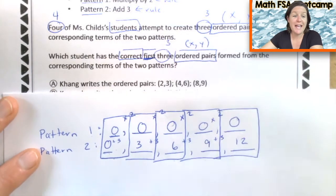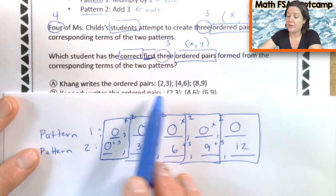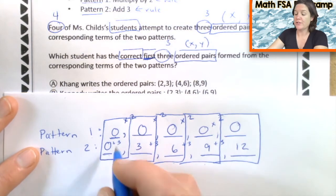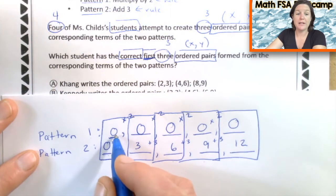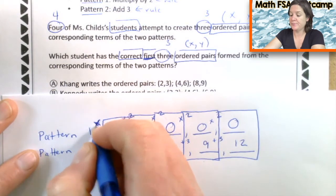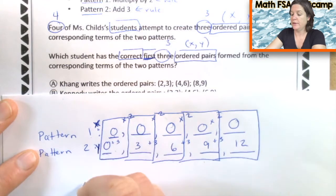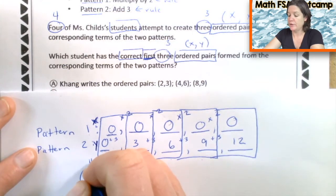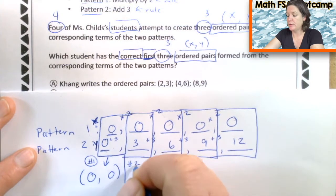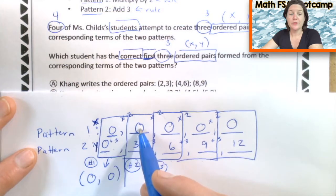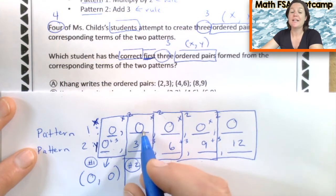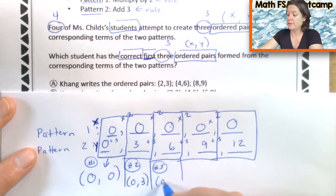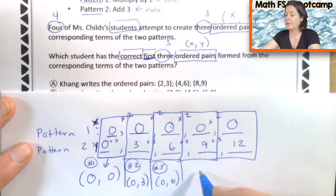To create three ordered pairs from the corresponding terms of the two patterns. Which student has the correct first, this is big, first three ordered pairs, x and y, formed from the corresponding terms of the two patterns. So let's look at the examples. This says Kang. Kang writes the ordered pairs (2,3), (4,6), (8,9). Well, the first three ordered pairs that they should be would be (0,0) first. This would be like your x and this would be your y. So (0,0) for this one and we need the first three, right? So here's number one. This would be number two. This would be number three. So the ordered pair from the corresponding terms would be (0,3) for the second term. And then for this one, it would be (0,6). And it only said the first three. So we don't have to really worry about these.